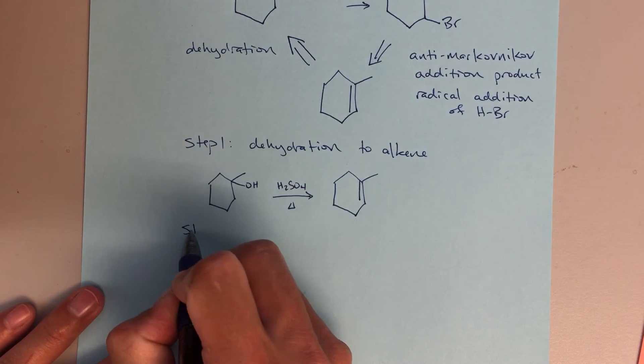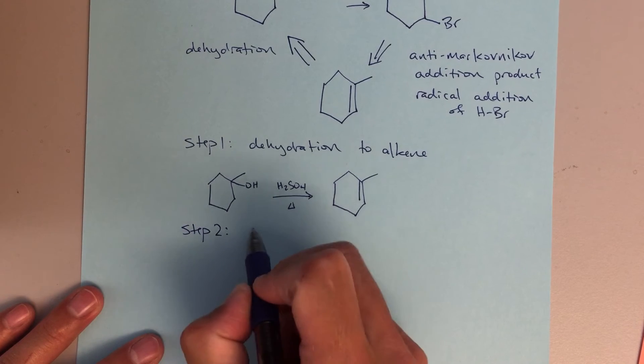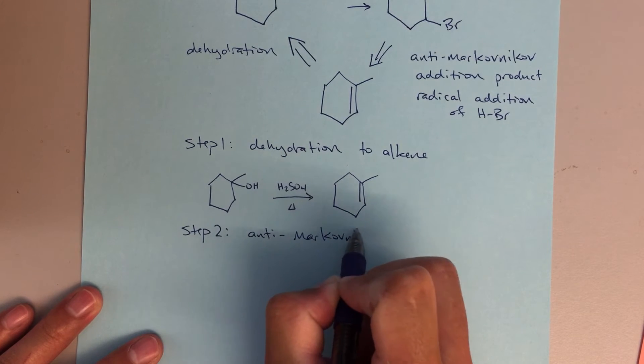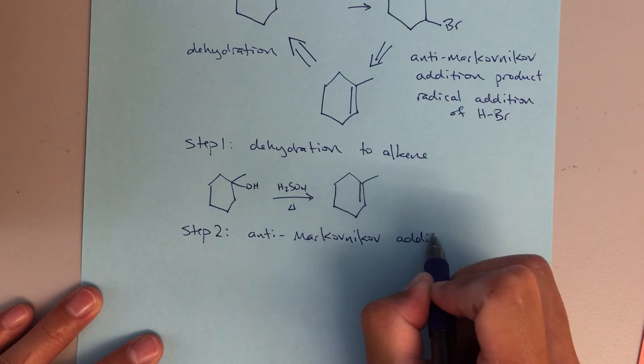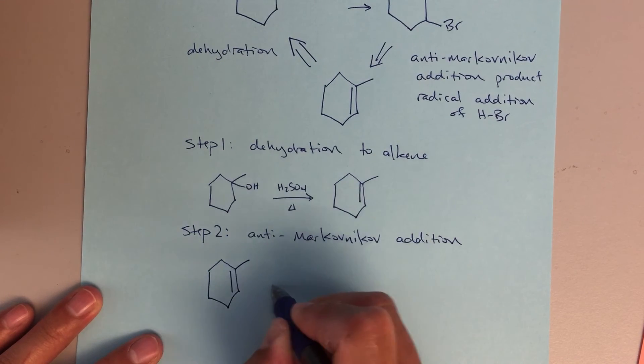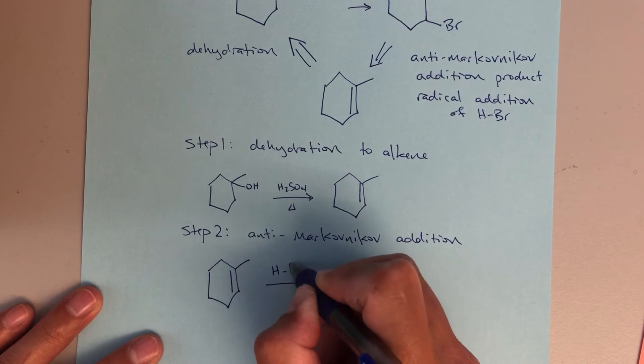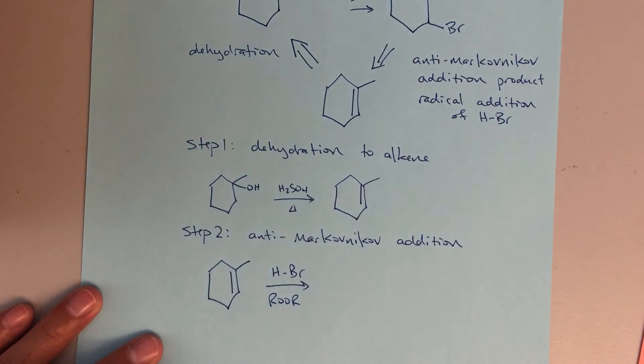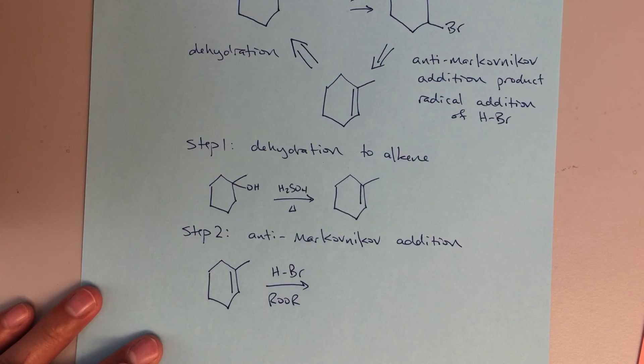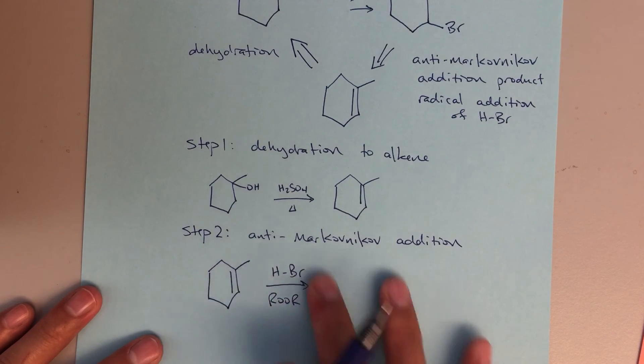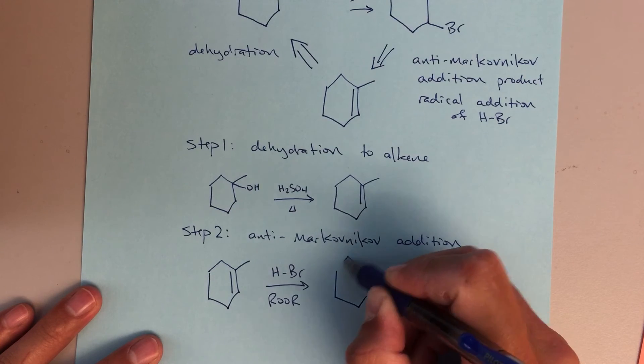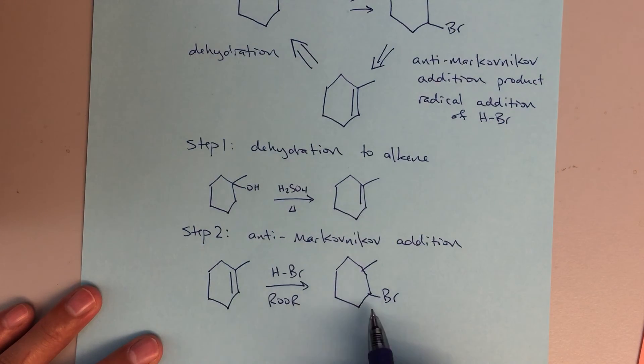And then step two is going to be anti-Markovnikov addition. For that, we're going to use HBr and some radical initiators. Here I'm just writing ROOR, a peroxide, a generic peroxide. And that's sufficient, I would say. Under these conditions, this will lead us to our desired anti-Markovnikov product.